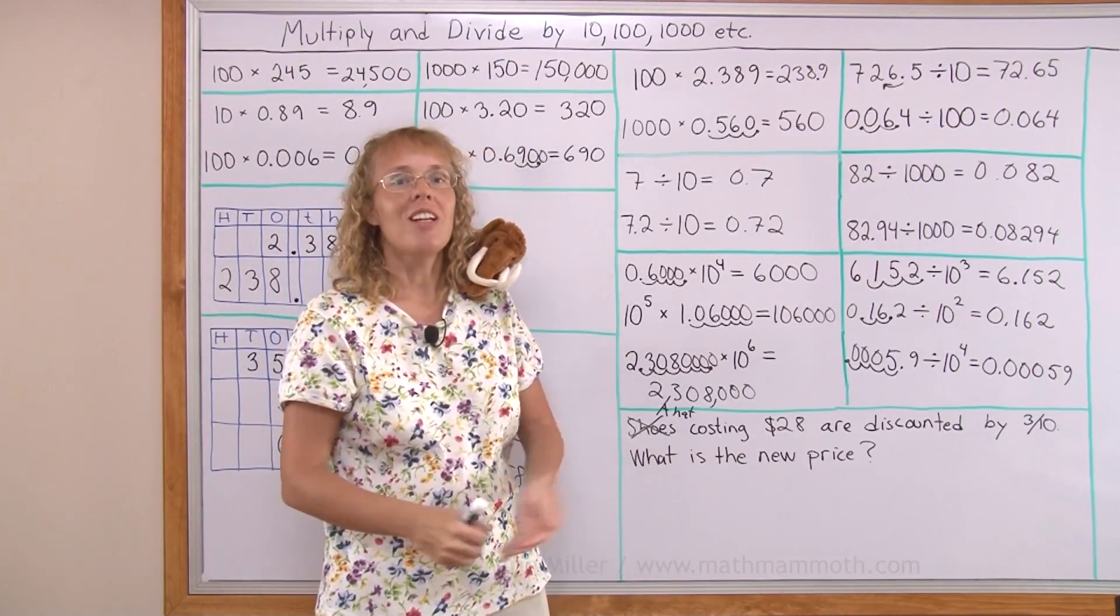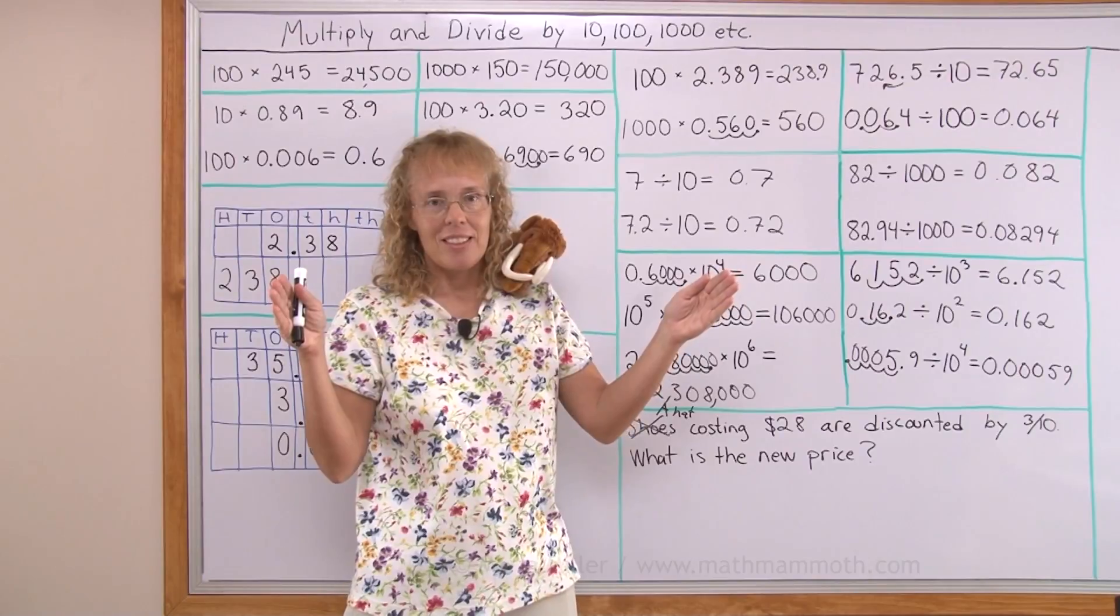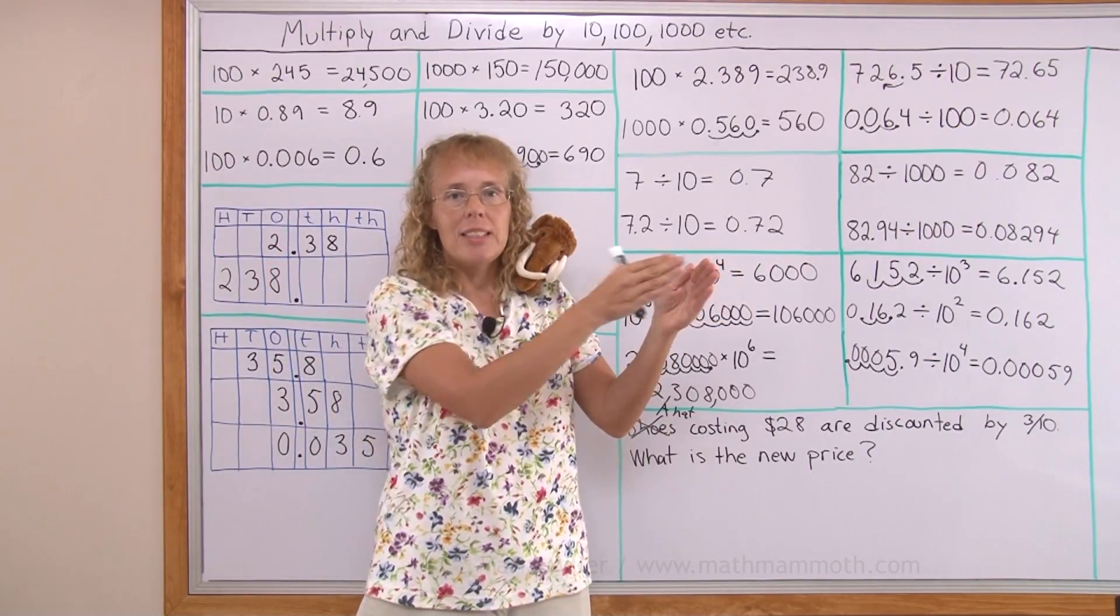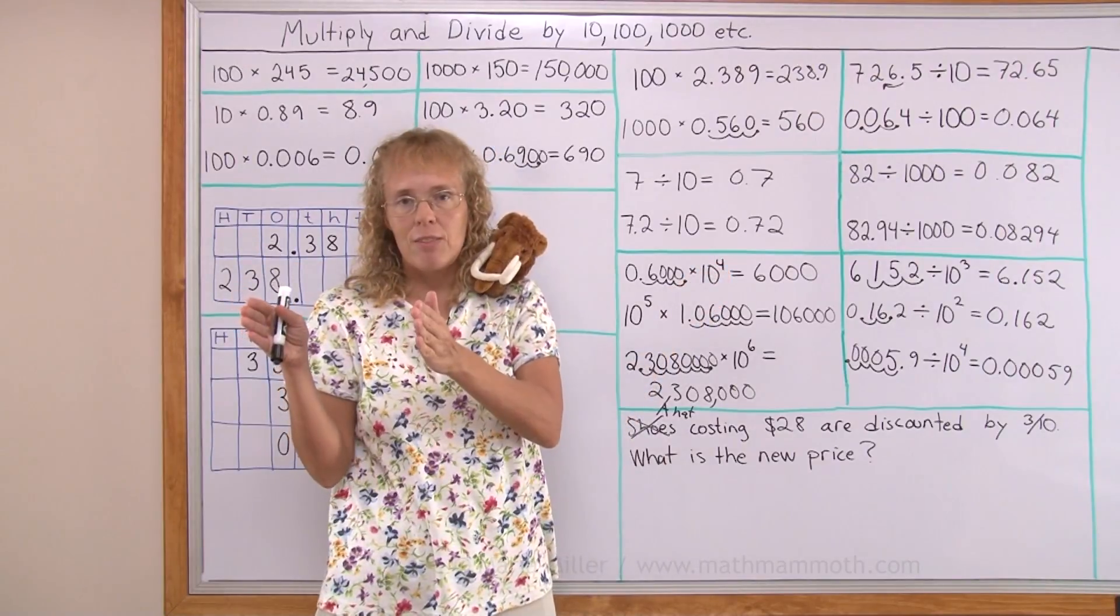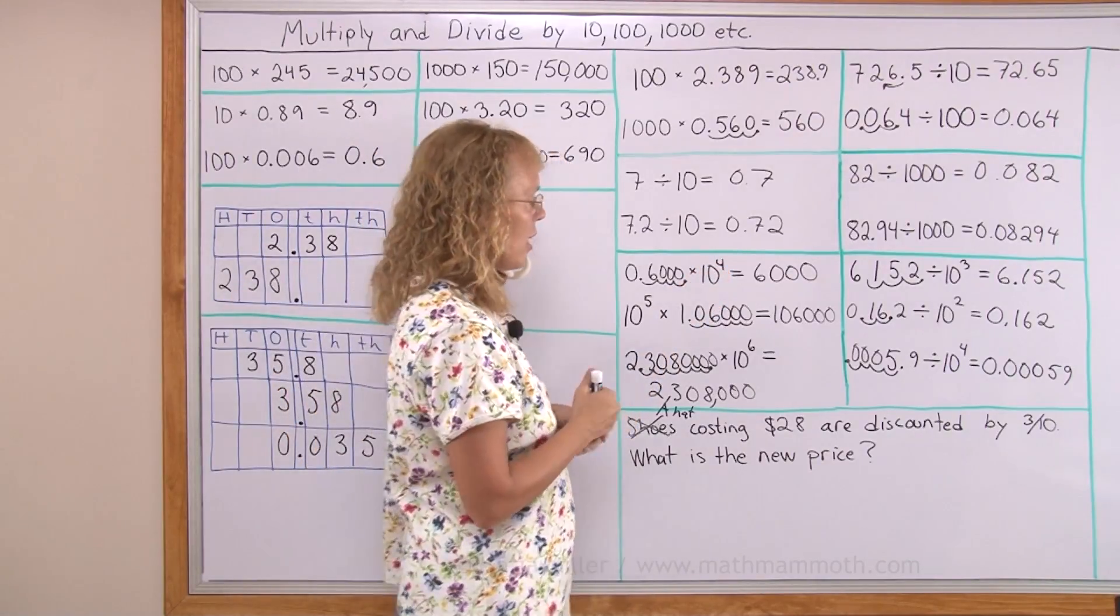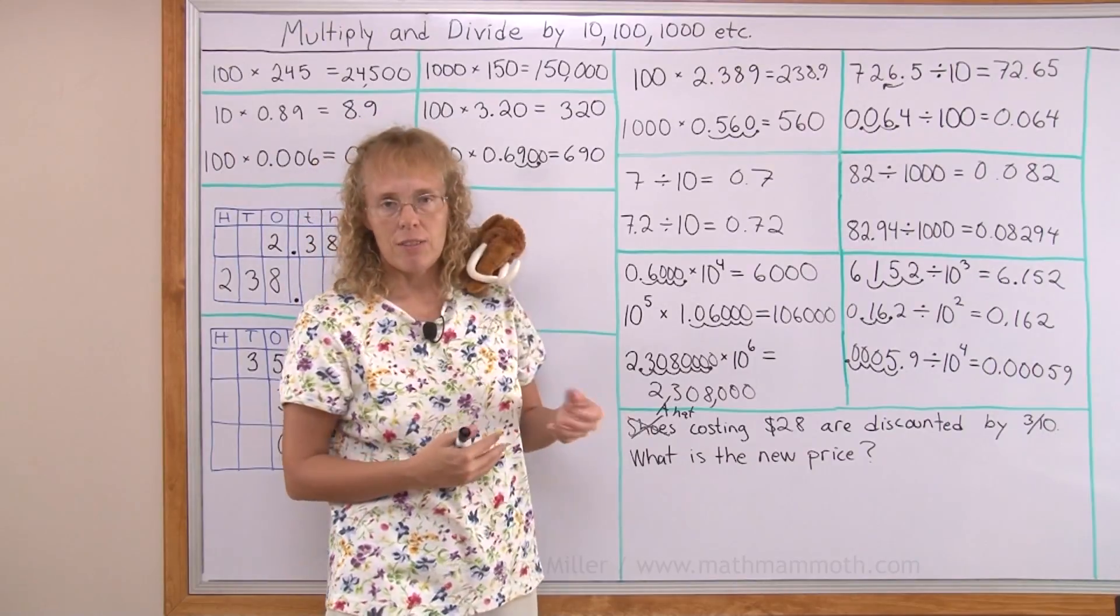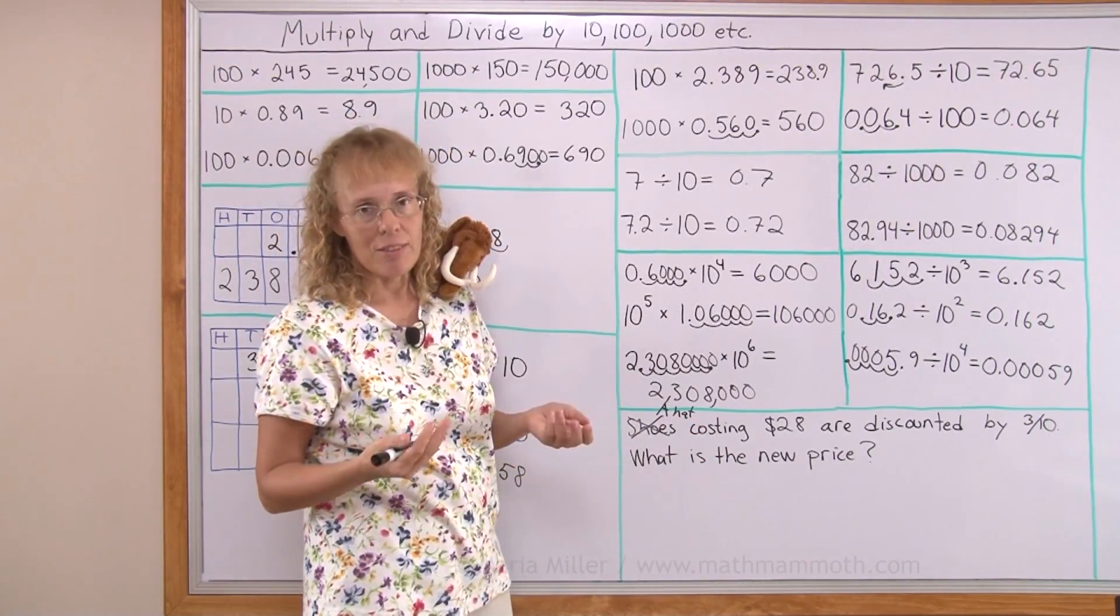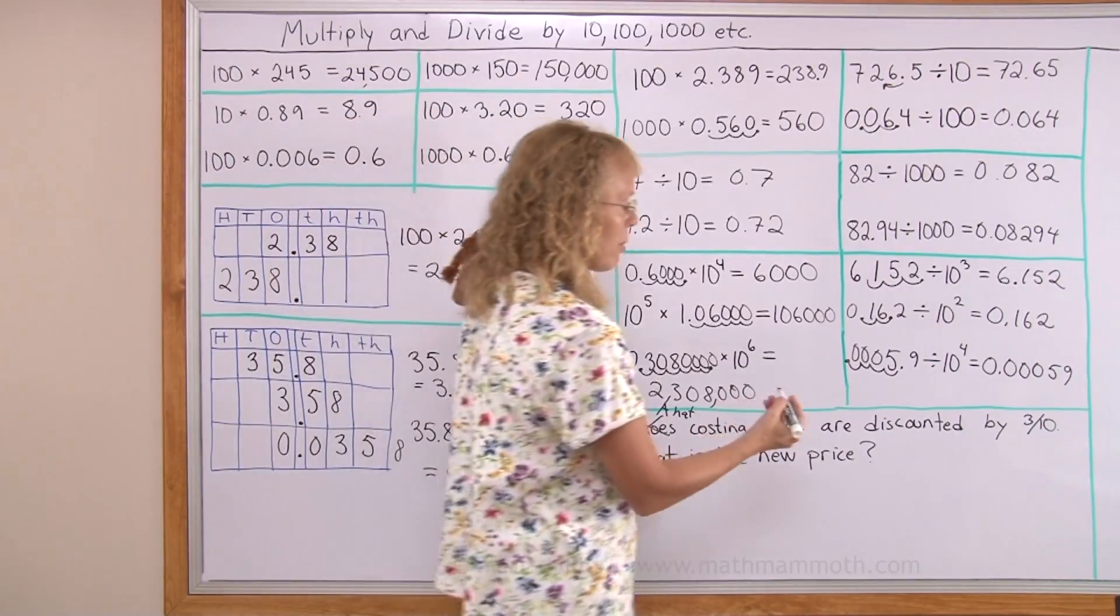I've had similar problems before. The whole price is here and the discount is three tenths of the price. So what is left of the price is seven tenths of the price and three tenths of the price is taken off. Now, to find three tenths of this price, I can use the idea that I'll find one tenth of the price and then multiply that.